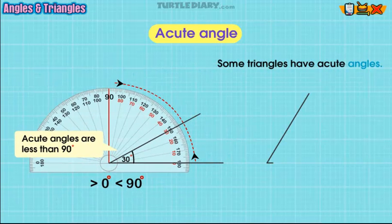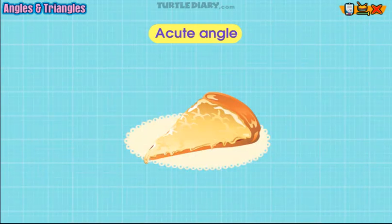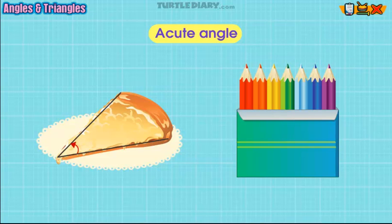Some triangles have acute angles. Here are a few examples: the slice of pizza that you eat for lunch is an acute angle. You get a new box of pencils to take to school. After you sharpen all of the pencils, you notice that the tips are acute angles.